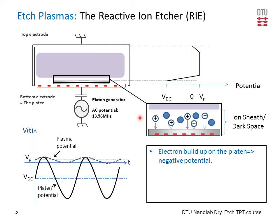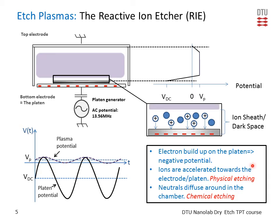This region is also called the ion sheath, because the ions created up in the plasma, when they come close to this boundary, feel the negative potential and are accelerated from the plasma down to the electrode. This gives rise to bombarding ions, and these bombarding ions are responsible for the physical etching. At the same time, neutral species created in the plasma diffuse around the whole chamber and also reach the surface of our sample, where they take part in chemical etching. So we have physical etching from the bombarding ions and chemical etching from the diffusing neutrals.